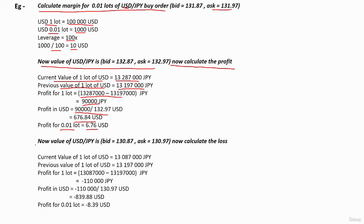Now the value of USD/JPY is this value. To calculate the loss, we calculate the current value of 1 lot of USD by multiplying the current bid value by 100,000. Then this is the previous value, multiplied by 100,000. So we calculate the loss by taking the difference.